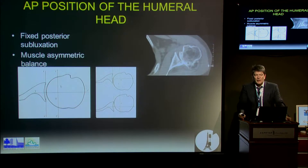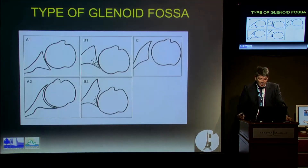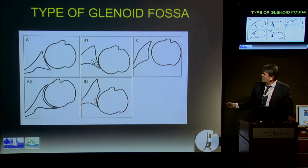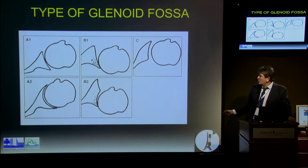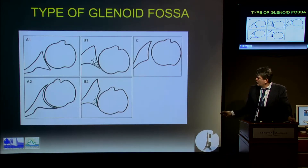This is why the problem is that we are working with prosthetic implants that are symmetrical, and we put them in patients with asymmetrical forces. The aspect of the glenoid is crucial. If you have an A1 or A2, these are not very difficult to deal with. If you have a B1, and especially a B2, then you're in trouble. You can have a B2 in young patients — I've seen B2 in patients younger than 50 years old, and B2 is very difficult to deal with.